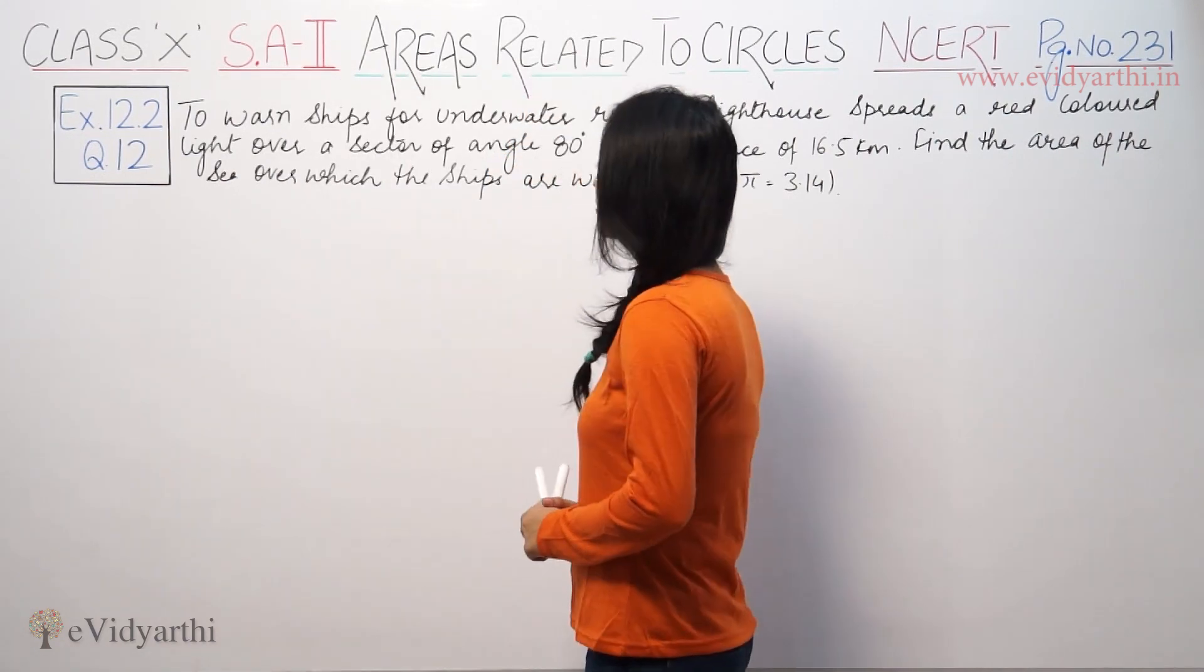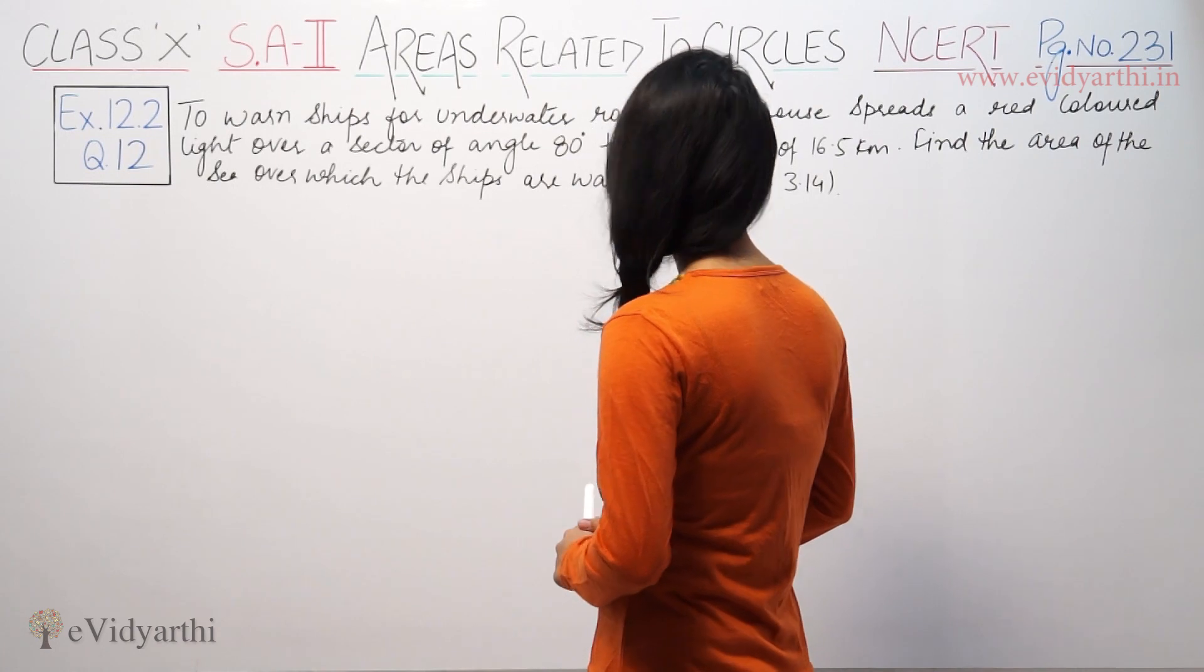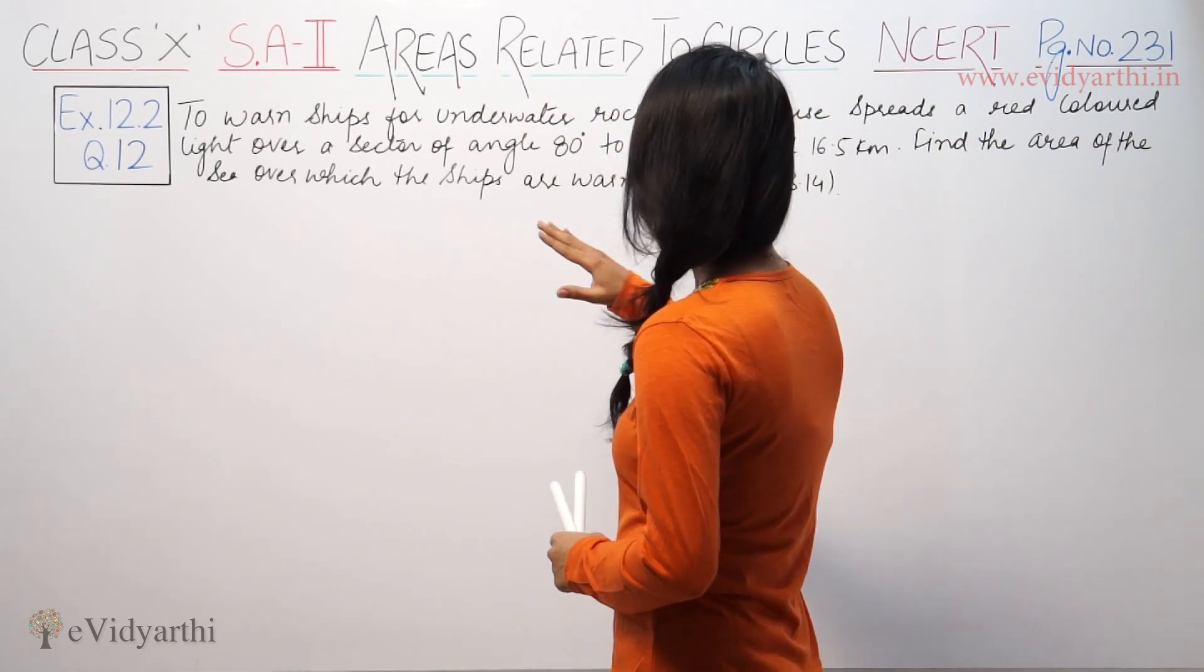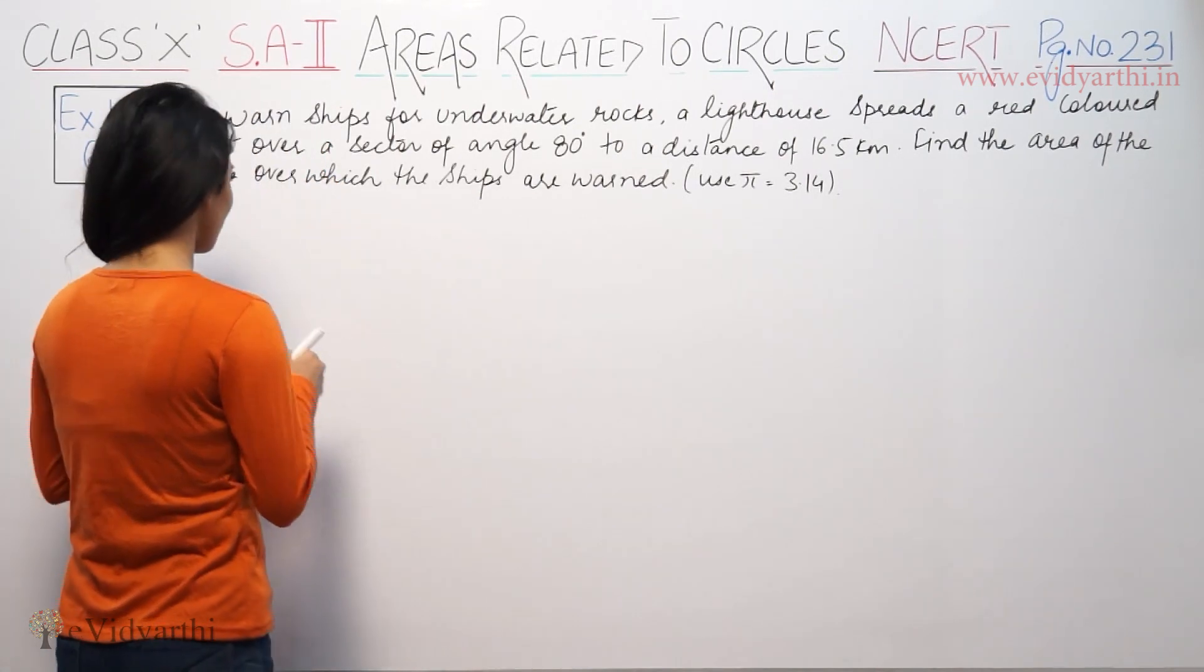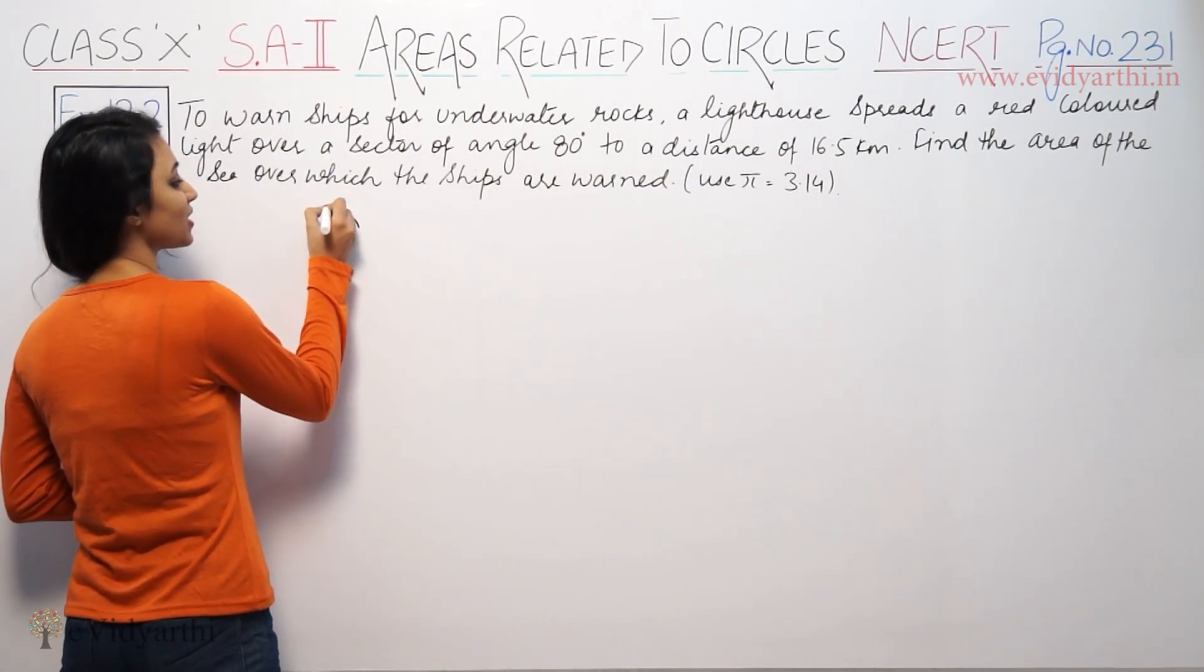This says to warn ships for underwater rocks, a lighthouse spreads a red colored light over a sector of angle 80 degrees to a distance of 16.5 km. Find the area of sea over which ships are warned.